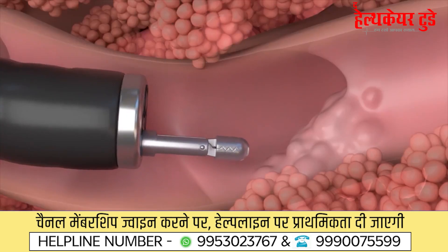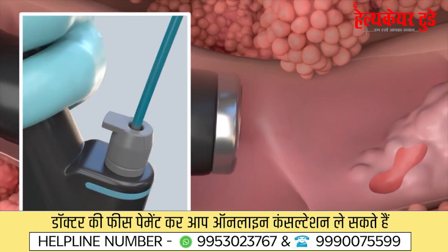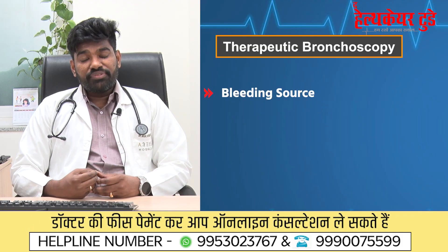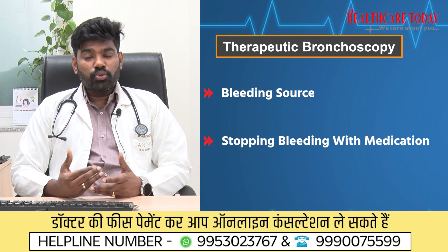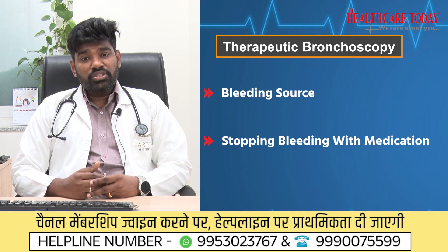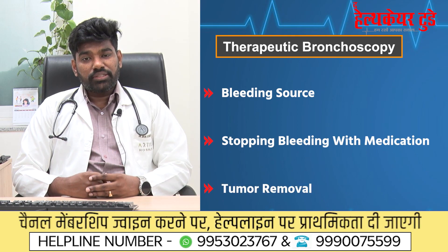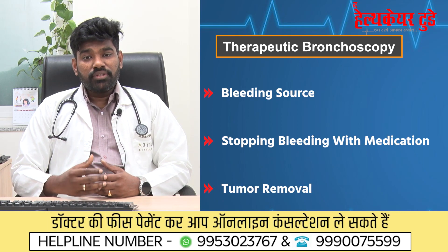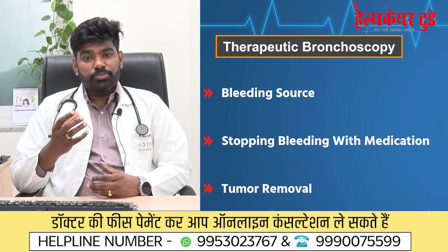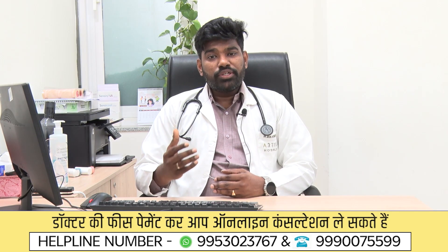Other indications include hemoptysis, where there is bleeding — you identify where the source of the bleed is coming from and try to stop it. This makes it both diagnostic and therapeutic. In the case of tumors, such as an endobronchial tumor, you can perform a debulking procedure to remove the entire tumor present in the airway and give the patient better breathing.